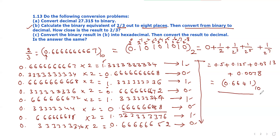So this is the decimal equivalent value for the binary representation of 2/3. The result 0.6641 is almost the same as 2/3. In two decimal positions, we have the same values — very close.